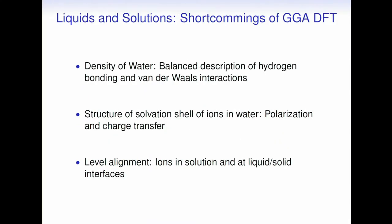So what do we want to do? We want to do liquids and solutions, and we know that after many years of doing water and ions in water and similar systems, there are still some problems with GGA DFTs. The question is: can we go beyond GGA DFT? Can we use non-local correlation methods and improve, for example, the density of water, where we need a balanced description of hydrogen bonding and van der Waals forces? Another shortcoming that was brought to our attention by experiments at PNNL is that the structure of the solvation shell of ions in water is not very accurately described by GGAs. Also, level alignment of ions in solution at solid-liquid interfaces is problematic for GGAs.